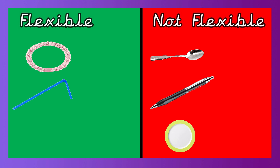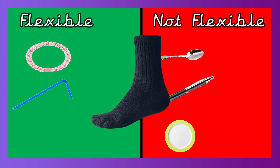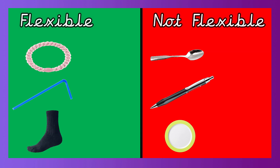Finally, let's pick up the sock. Put it in one hand and with your other hand use your little finger to see if you can bend it. Is the sock flexible? It is, isn't it! Let's put the sock in the flexible side. So the materials we found flexible today were rubber, plastic, and fabric.